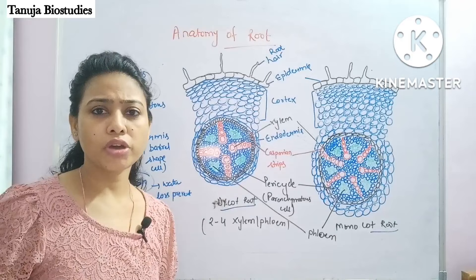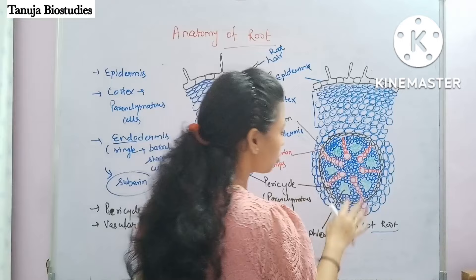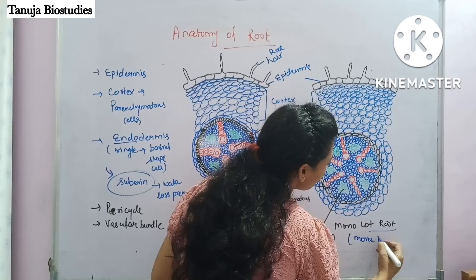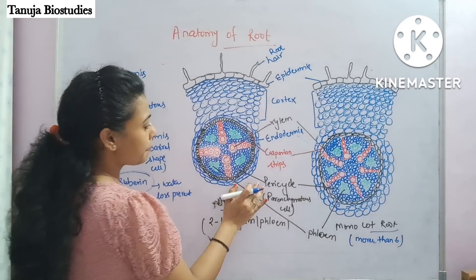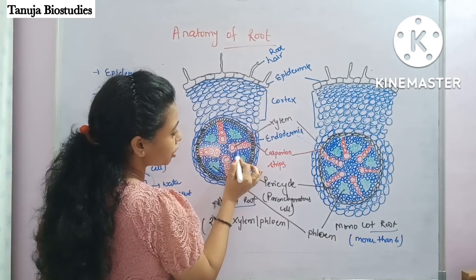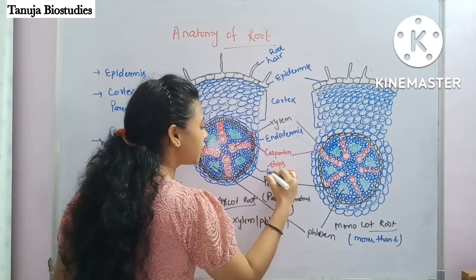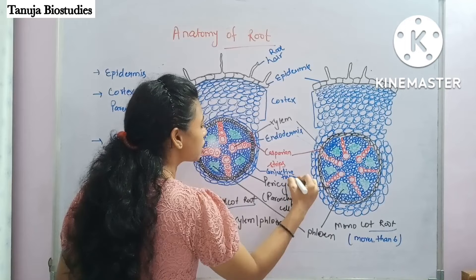What is the key difference between monocot and dicot? In the dicot root there are 4 xylem and phloem bundles, whereas in the monocot root there are more than 6. The tissue between xylem and phloem is called conjunctive tissue.